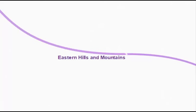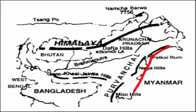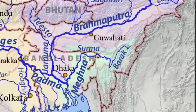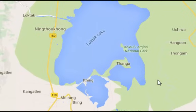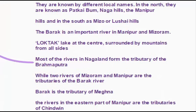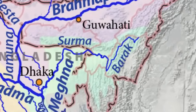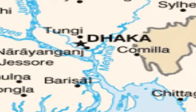The eastern hills and mountains are the last part of the Himalayas. They are known by different local names — in the north as Patkai Bum, Naga Hills, Manipur Hills, and in the south as Mizo or Lushai Hills. The Barak is an important river in Manipur and Mizoram. Loktak Lake, surrounded by mountains from all sides, is also an important lake. Most rivers in Nagaland form tributaries of the Brahmaputra, while two rivers of Mizoram and Manipur are tributaries of the Barak river, which itself is a tributary of Meghna. Rivers in the eastern part of Manipur are tributaries of Chindwin.